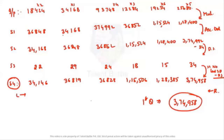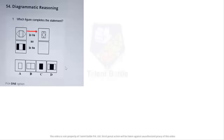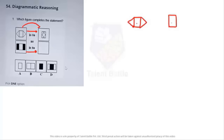Let us answer the next question: which figure completes the statement? The first figure is to the second figure as the third is to what. Pause the video and try to answer on your own. The relation: we have a rectangle shape with two wings, and a final figure with the same rectangle inside plus two such figures.